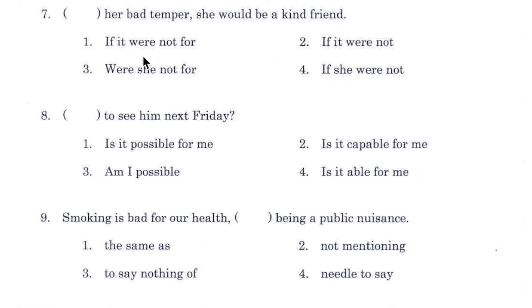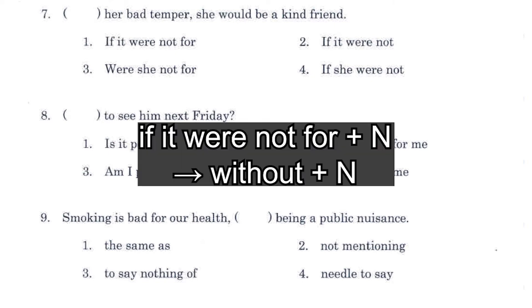Number 7. 'If it were not for / if it were not / were she not for / if she were not her bad temper, she would be a kind friend.' Number 1: 'if it were not for'. This is a set phrase you have to remember. It means the same as 'without'. So, without her bad temper, she would be a kind friend.